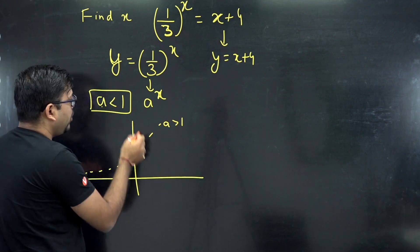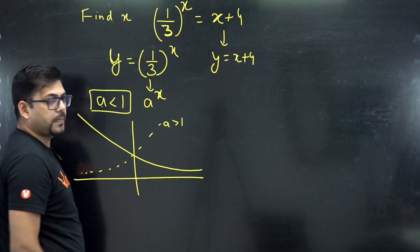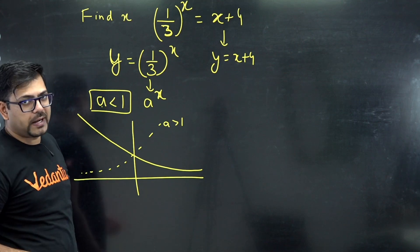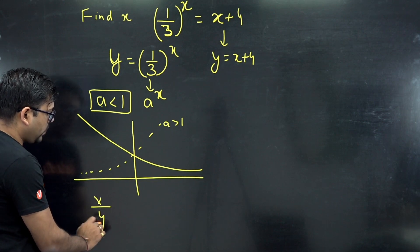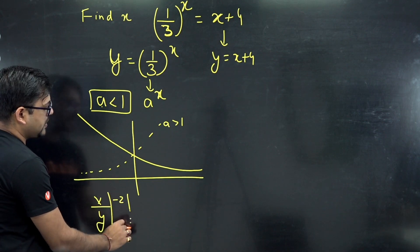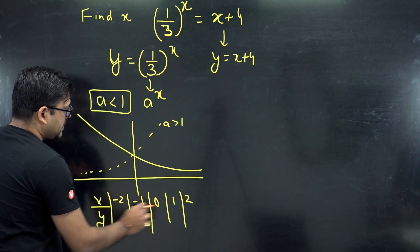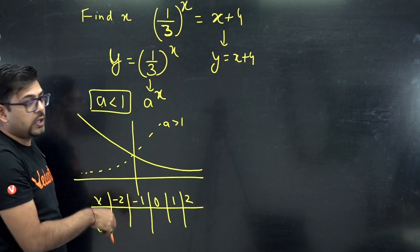And those people who do not know how to make graphs or how am I getting this value, you don't need to worry. You just need to do x and y, make a table, put different values like minus 2, minus 1, 0, 1, and 2. Put some random five values for all the values.